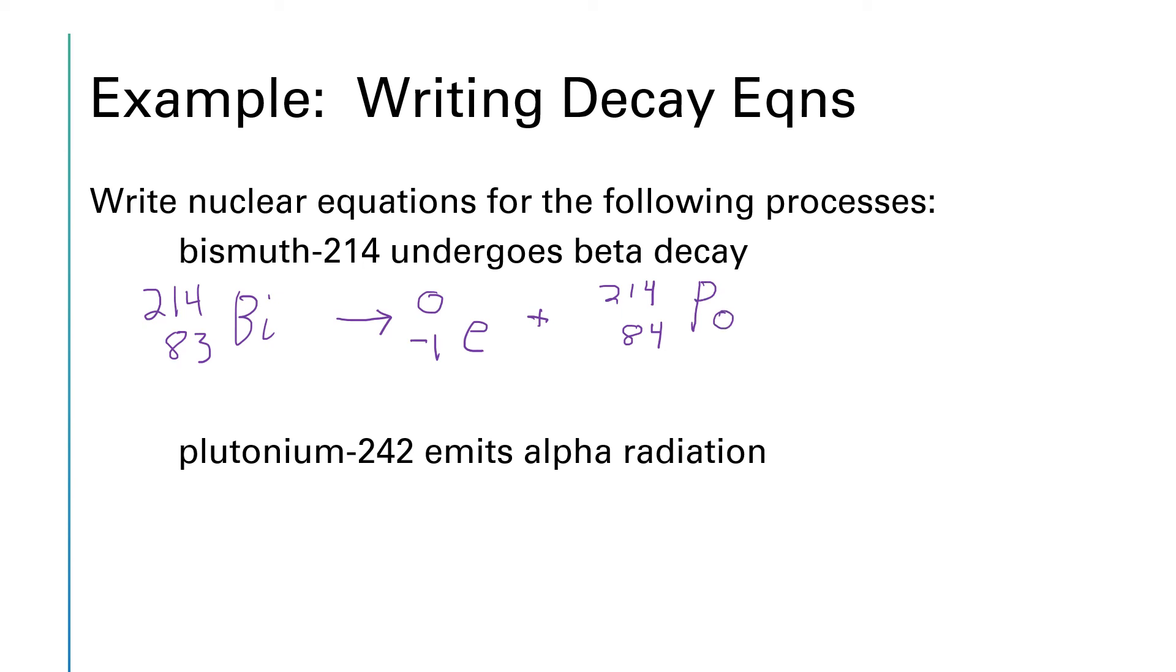The next one says that plutonium-242 emits alpha radiation. So I'm going to start with 242Pu, and I need to go to the periodic table to find plutonium's atomic number, which is 94. So plutonium emits alpha radiation, so 4, 2He will be one of my products. The missing product has to supply the rest of the particles, so the mass numbers have to add up to 242. 242 minus 4 gives me 238.